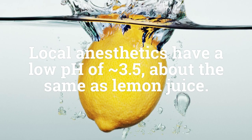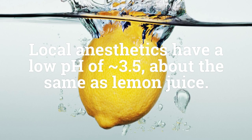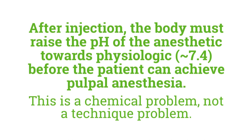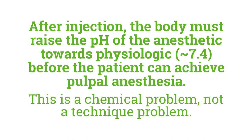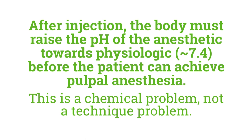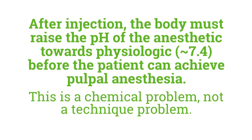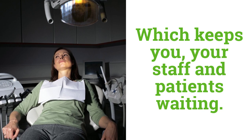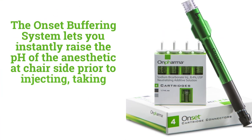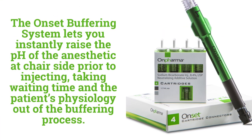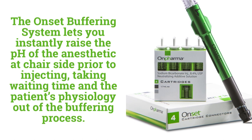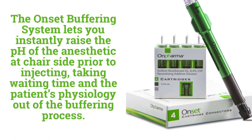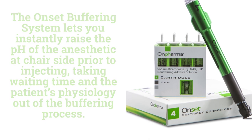Local anesthetics have a low pH of 3.5, about the same as lemon juice. After injection, the body must raise the pH of the anesthetic towards physiologic before the patient can achieve local anesthesia. This is a chemical problem, not a technique problem, which keeps you, your staff, and patients waiting. The OnSet buffering system lets you instantly raise the pH of the anesthetic chairside prior to injecting, taking waiting time and the patient's physiology out of the buffering process.